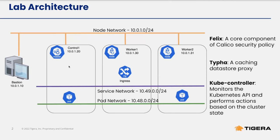As a brief overview of what each component does: Calico node runs as a daemon set on every cluster node, and Felix is a core process running inside Calico node. One of Felix's main responsibilities is realizing and enforcing Calico security policies on the data plane. Calico Typha is a caching data store proxy that sits between the Calico nodes and the Kubernetes API server, primarily to allow for scale. Calico kube controllers monitor the Kubernetes API and perform actions based on cluster state.